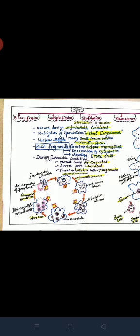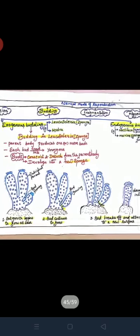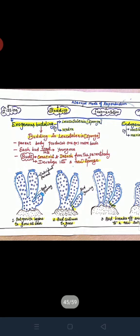Next, we will see other modes of asexual reproduction. I hope we have completed fission fully. Now we are going to see a new topic: budding. The small bulb-like projection coming out of the parental body is called a bud, and this is a type of asexual reproduction. There are two types of budding.